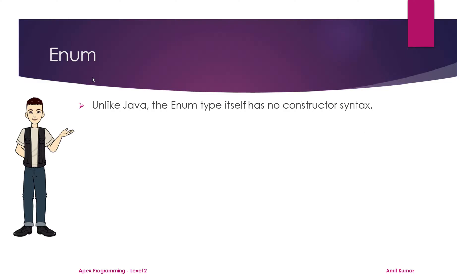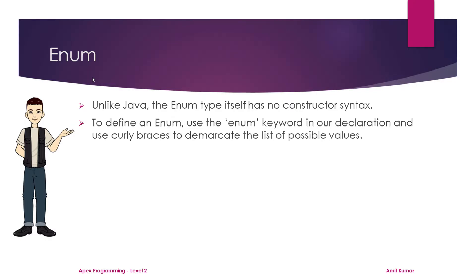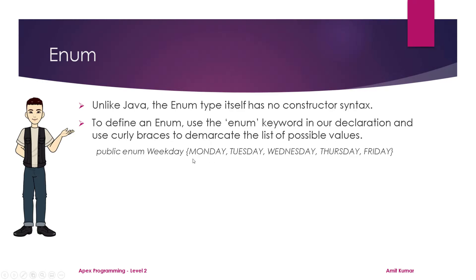Unlike Java, the Enum type itself has no constructor syntax. To define an Enum, use the Enum keyword in your declaration and use curly braces to demarcate the list of possible values. One point to note: since Enum uses an opening curly brace, we won't use any semicolon to end the statement — the curly brace itself demarcates the block.